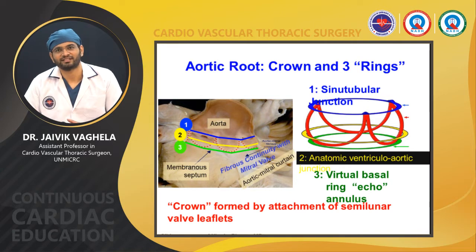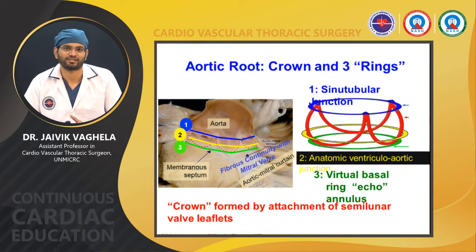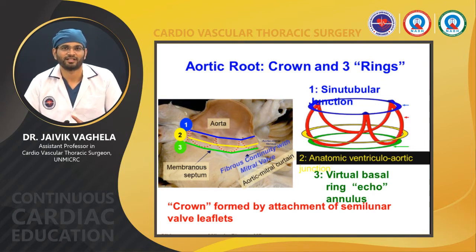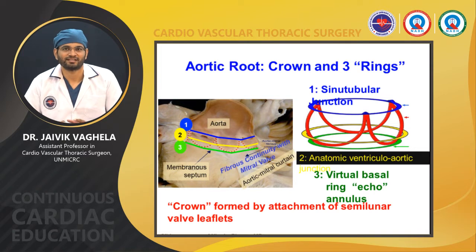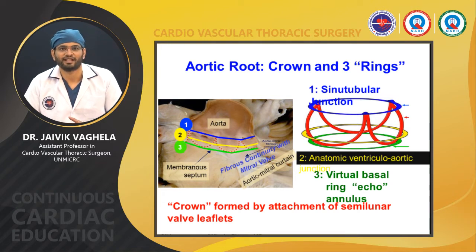There is mainly the sinotubular junction indicated by the blue line, then the yellow line which is the anatomical ventricular-aortic junction, and a third line which is the virtual basal echogenic ring. The green line is not an actual anatomical part but is the lowest portion of the aortic leaflet, which when measuring on echo gives rise to the aortic annulus. There is a difference between anatomical and virtual: the virtual is mainly for echo measurement, while the anatomic junction is the boundary between left ventricular and aortic tissue.